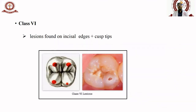Class VI is an additional classification not given by G.V. Black but by Dr. Simon, who found that the incisal tips and cusp heights of molars and incisal edges of anterior teeth are also susceptible to caries. These lesions are not very commonly seen but can appear in patients regularly. Thank you very much for listening and I hope this video is useful for you.